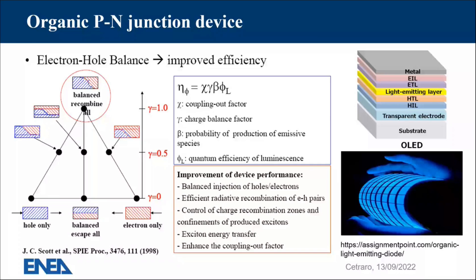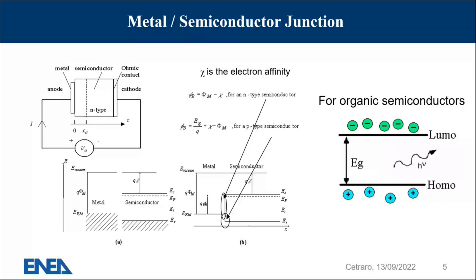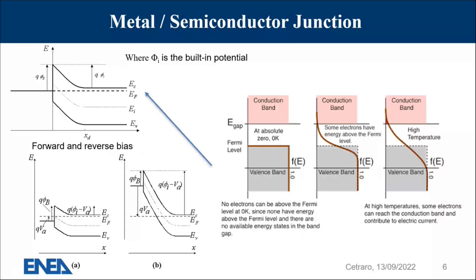In particular, for the metal-semiconductor interface, as everybody knows, there is an important level that is the Fermi level. When you put together two materials, something will change and some barriers will appear for holes and also for electrons. These barriers are the first limits for the devices. When you apply a potential to the device, the situation changes, and the barriers will be slightly different. When you apply forward or reverse potential, you will have different effects and different possibilities for charges to go over the barrier.